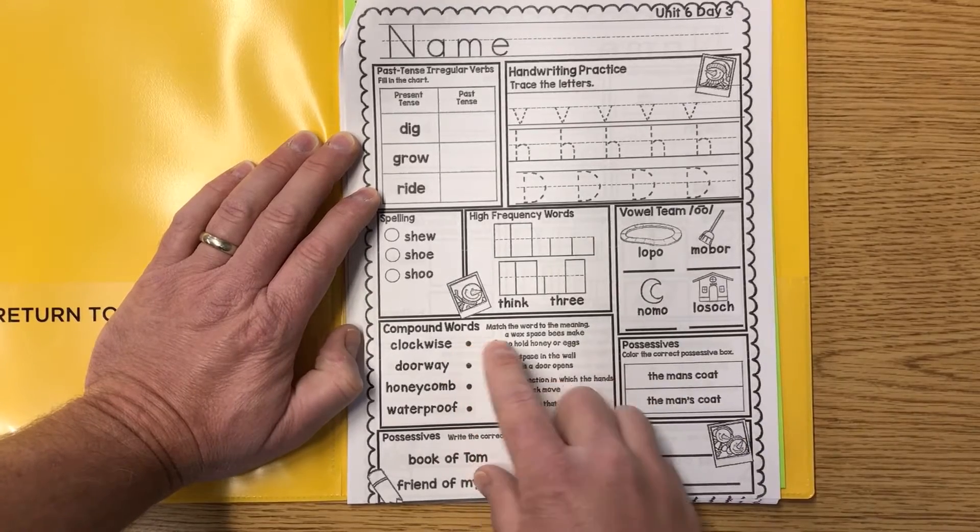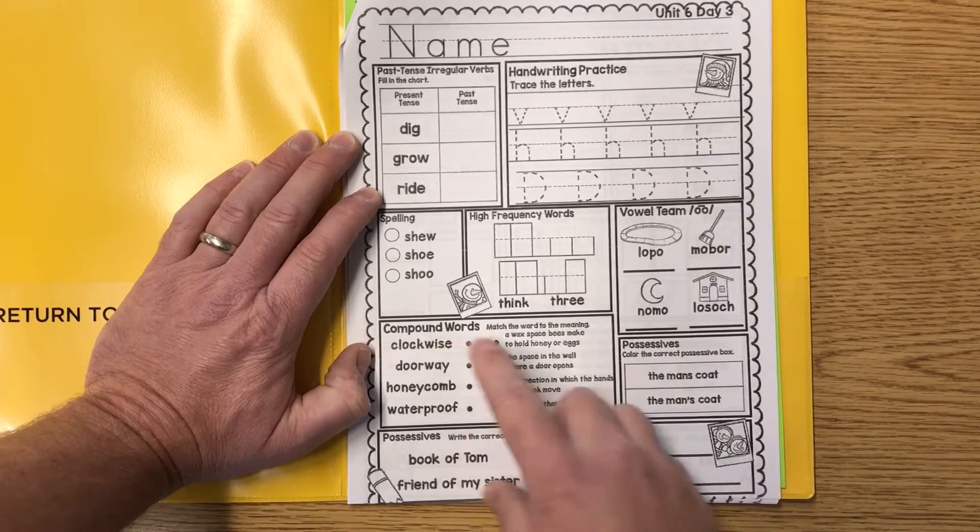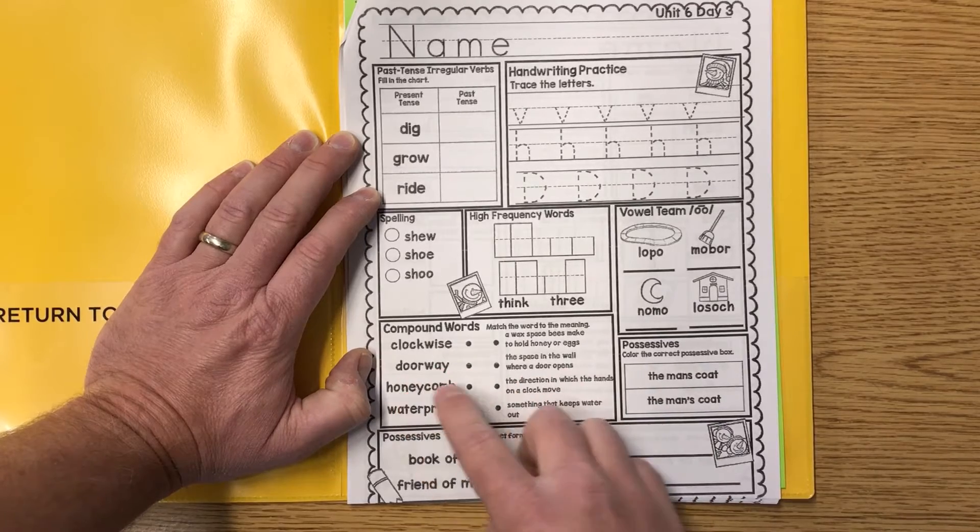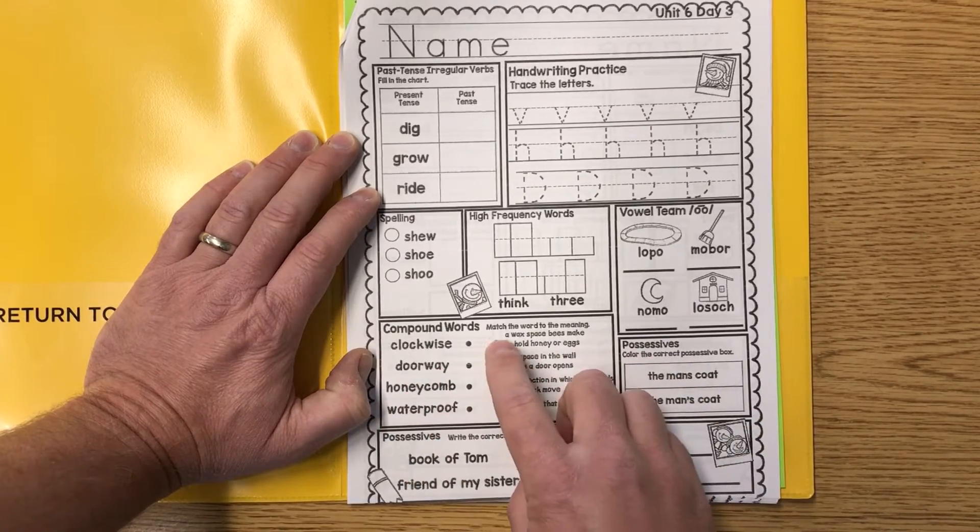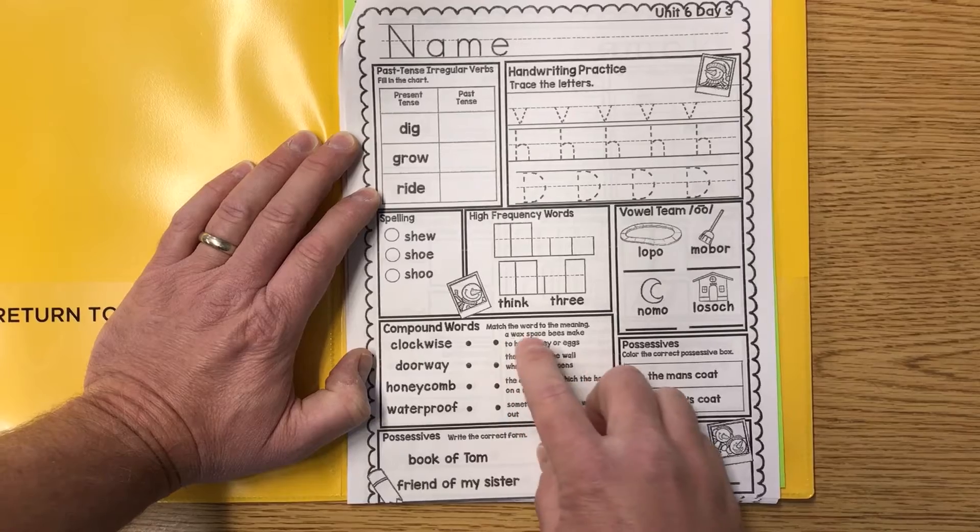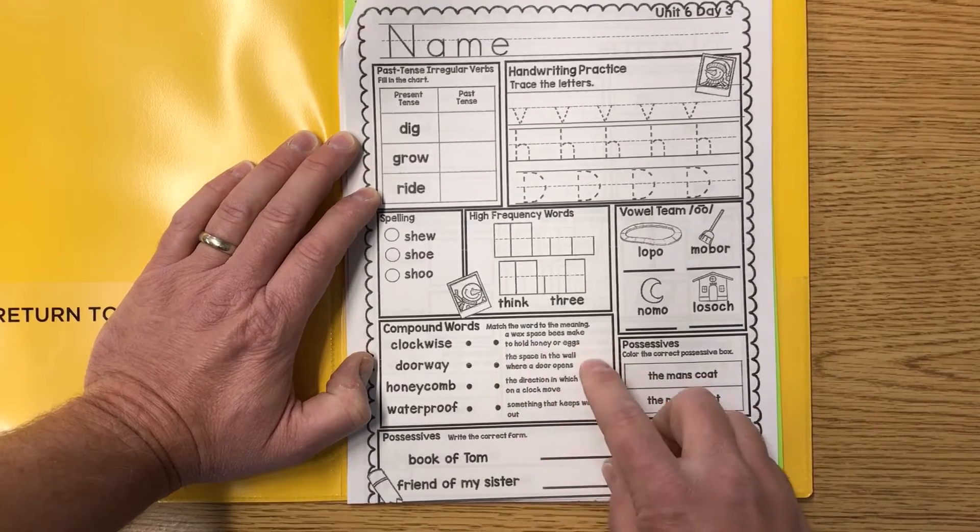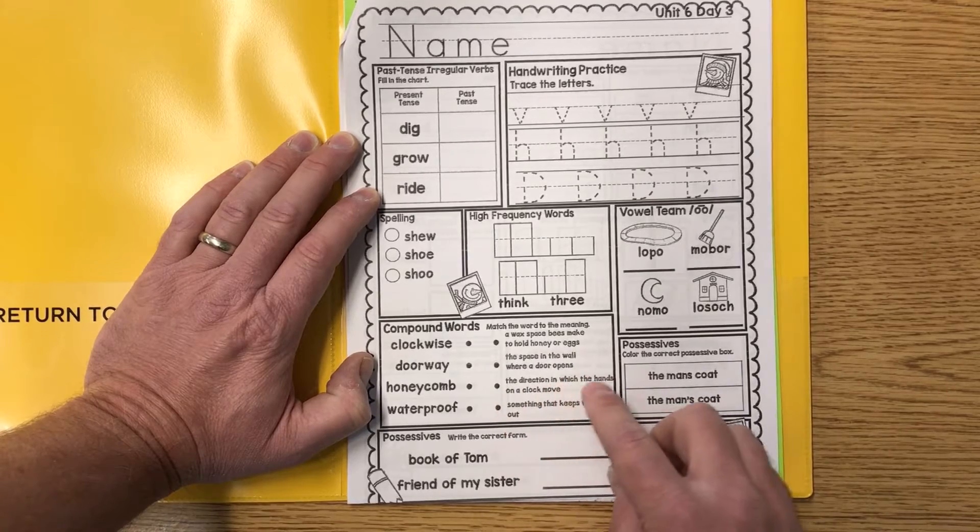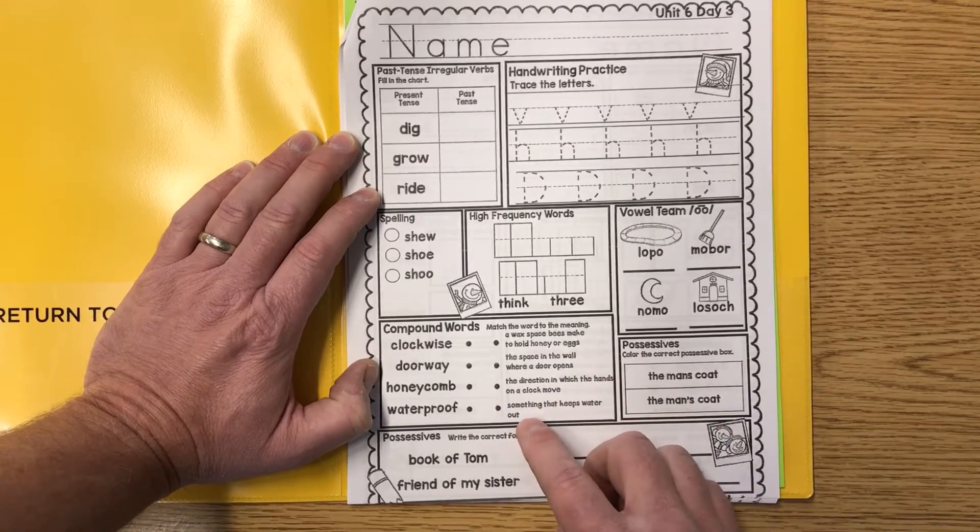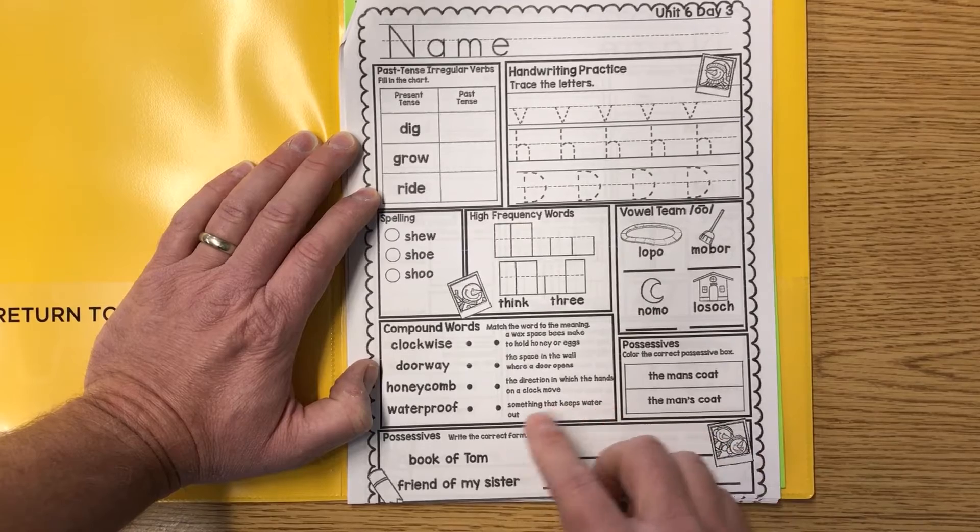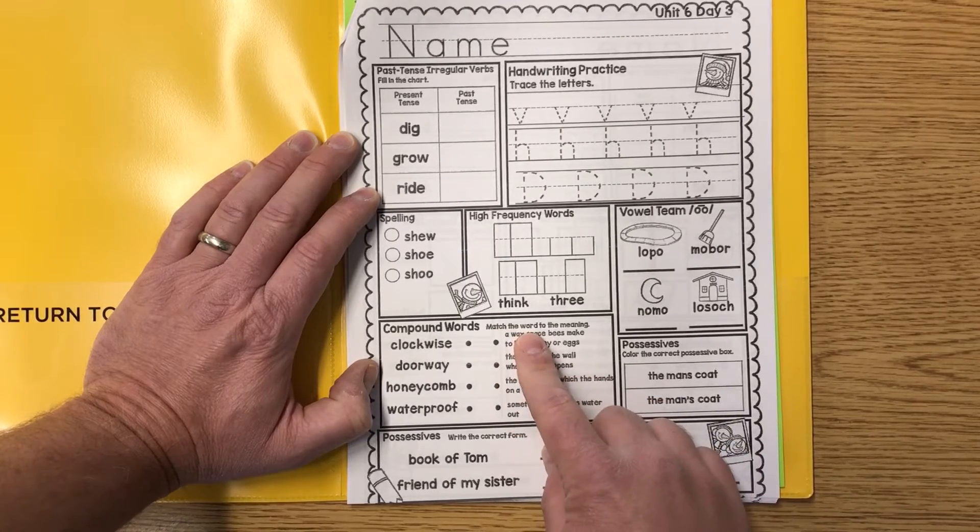Compound words. Match the word to the meaning. We got clockwise, doorway, honeycomb, waterproof. Here are some meanings here. A wax space bees make to hold honey or eggs. The space in the wall where a door opens. The direction in which the hands on a clock move. And something that keeps water out. Can you match the word to the meaning?